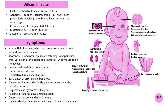Kayser-Fleischer rings are characteristic green or golden-brown rings around the cornea of the eye caused by copper deposition. They are a key diagnostic feature of Wilson disease.